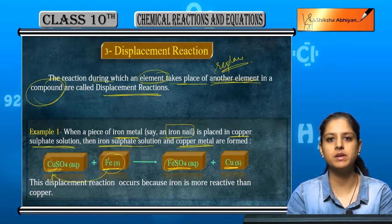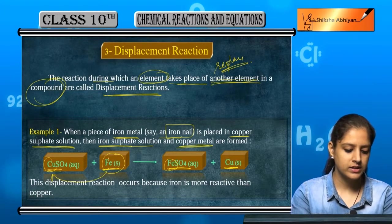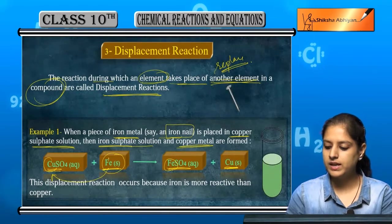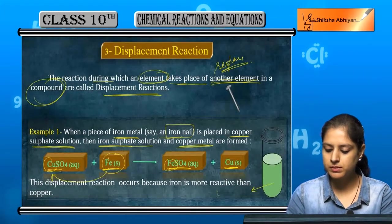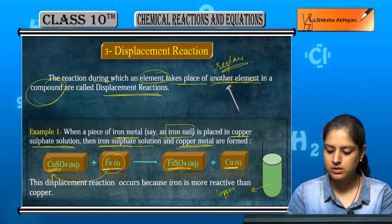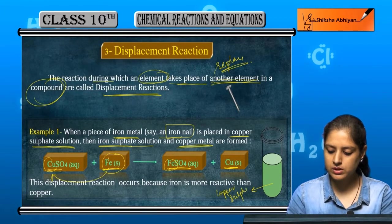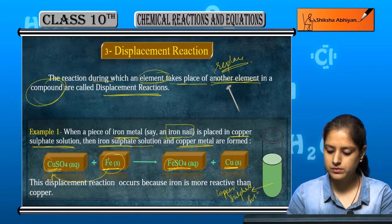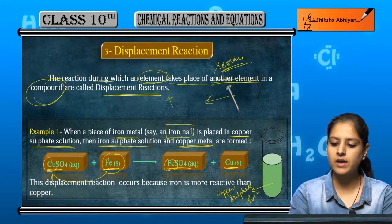This is a displacement reaction. Let us see how. If this is a test tube, I add copper sulphate solution and this is an iron nail.